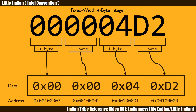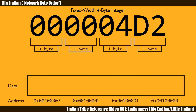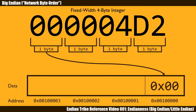Now we look at big Endian. This is exactly the opposite of little Endian. With big Endian, the most significant byte goes in first. In other words, the most significant byte goes into the lowest memory address. The rest then follows.